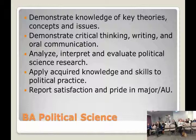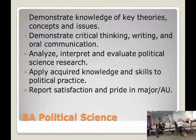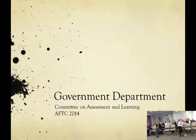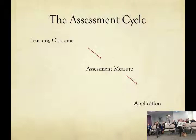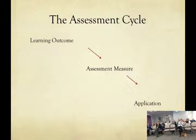Kimberly has a need to leave early, so she's going to go first. In theory, the assessment cycle is supposed to go: you develop your learning outcomes, develop your measure for assessing them, collect the information, sort through the data, and then apply the lessons learned to improve your program, improve the ability of students to learn, or alter the learning outcomes as you find out more about your program.